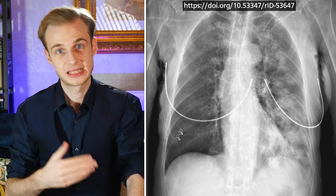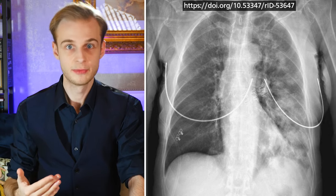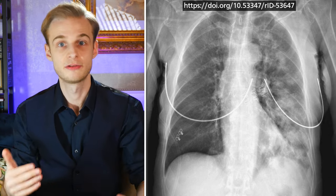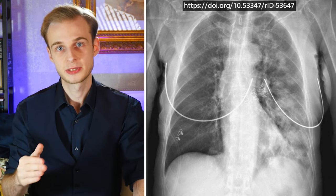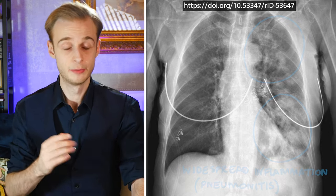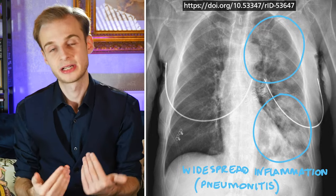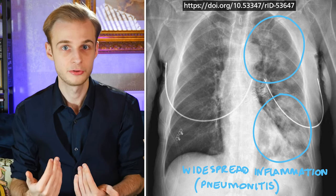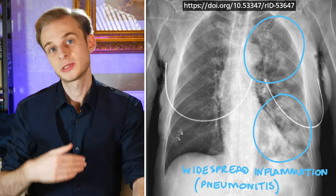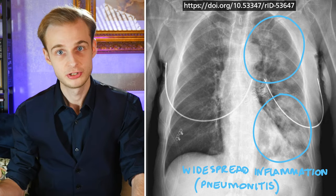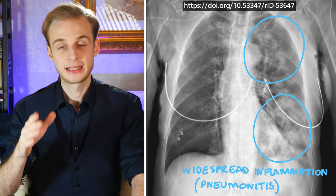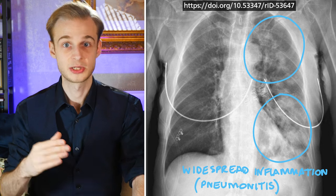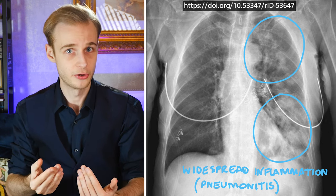Here is an example of an aspiration pneumonia, where solids or liquids are aspirated into the respiratory tract. Erect patients — those who are sat up or stood up — are more likely to have aspirated substances move into the basal and middle lobes, whereas a recumbent patient, such as somebody lying down post-surgery, is more likely to have the posterior part of their upper lobe affected, as well as the superior part of the lower lobe.